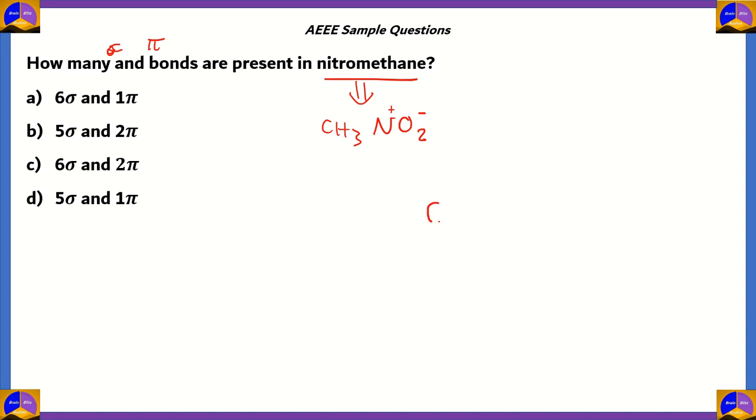When we look at its structure, you can see that carbon has bonded to 3 hydrogen atoms with a single bond, and then it bonds with nitrogen in a single bond. This nitrogen forms a double bond with one oxygen and then forms a single bond with another oxygen,